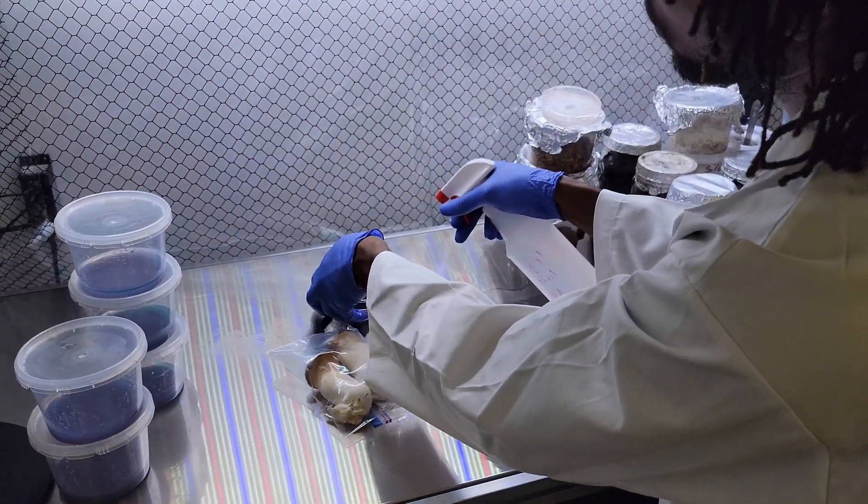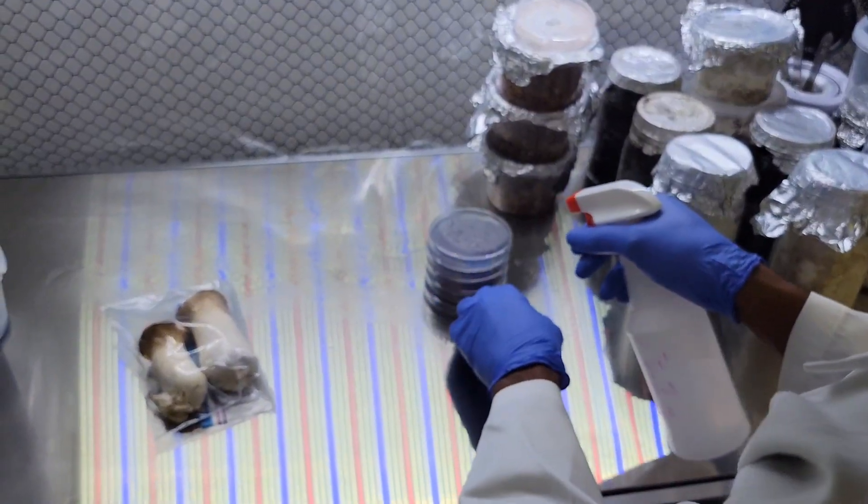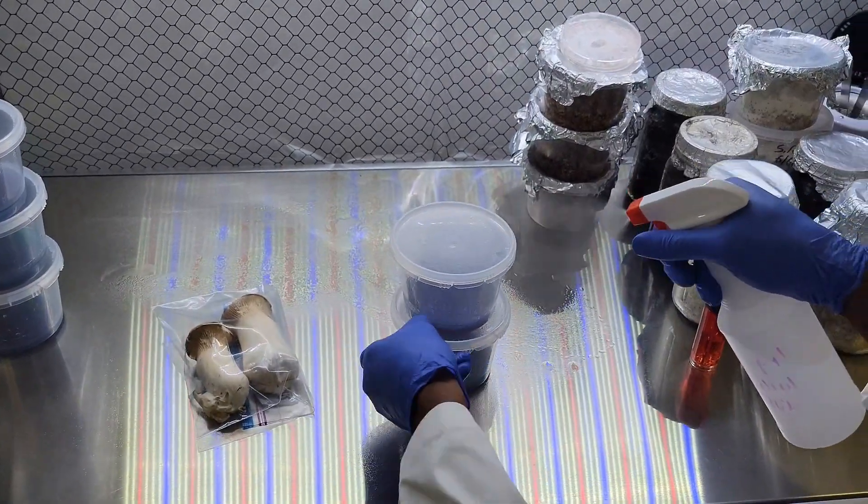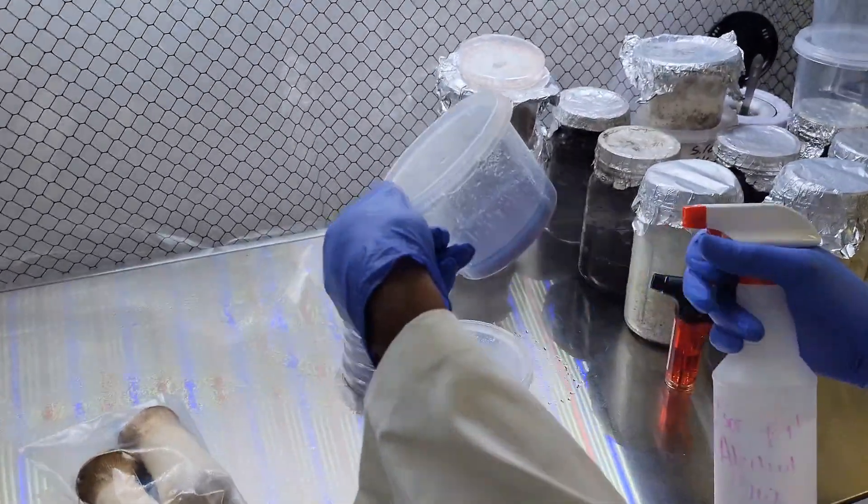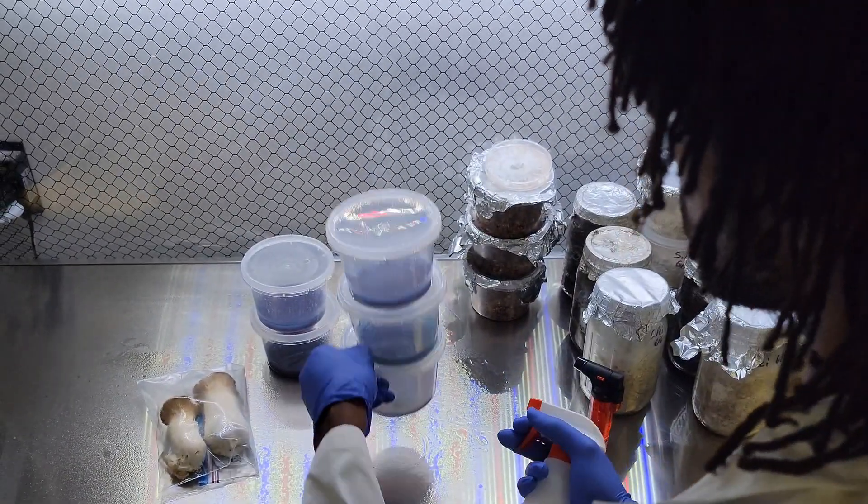Back in the lab again. You guys know the deal, we're making sure everything is sterile before we get started, spraying our petri dishes. Today we're working on king oysters, also known as Pleurotus eryngii. We're going to be inoculating plates and cups that have the same media.